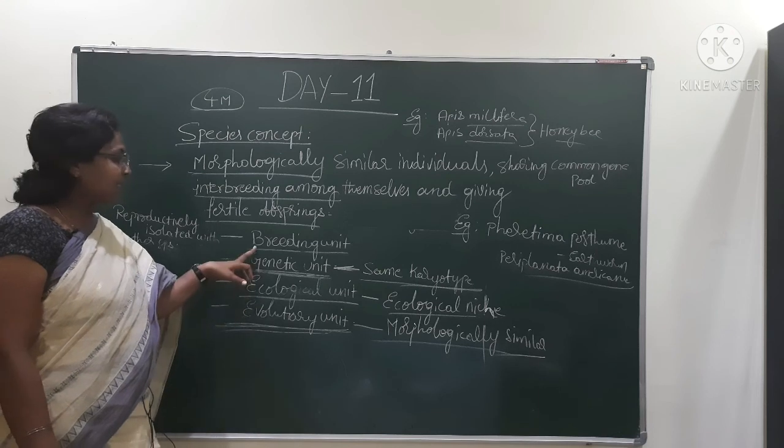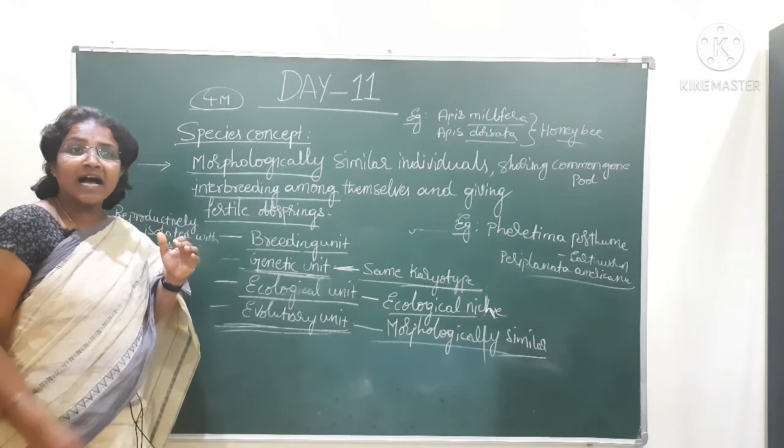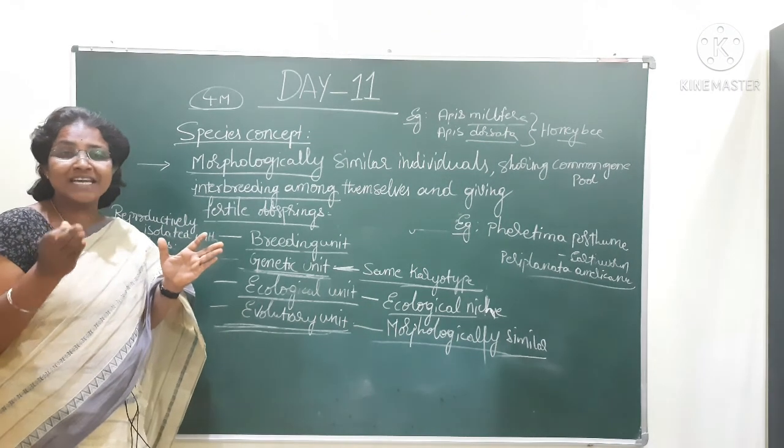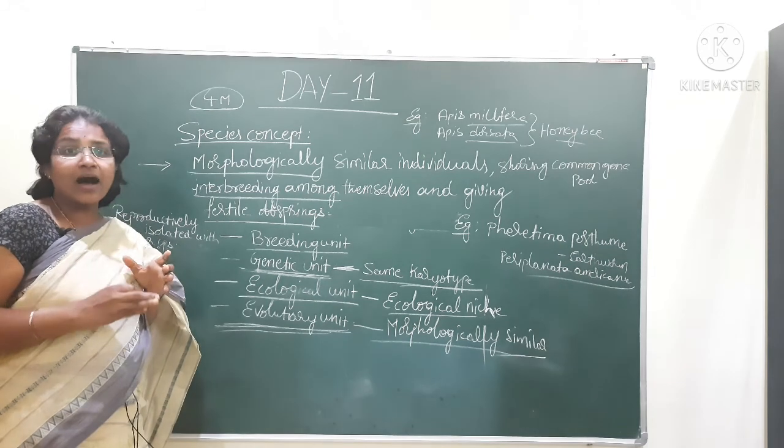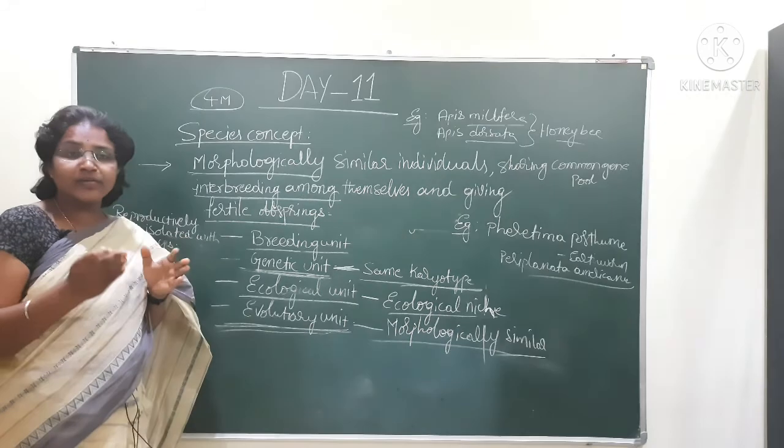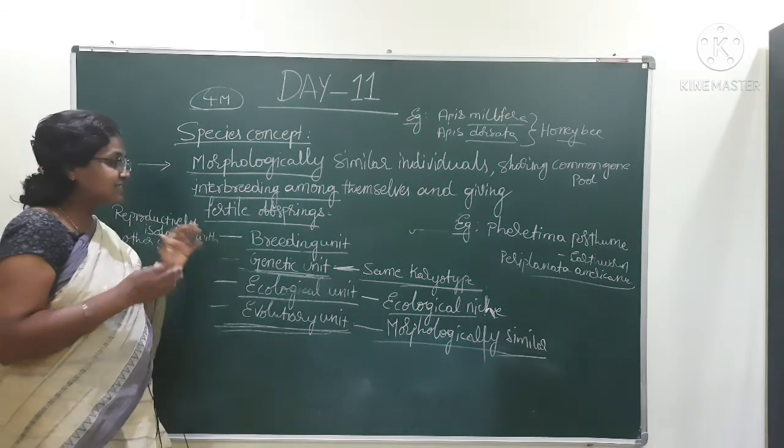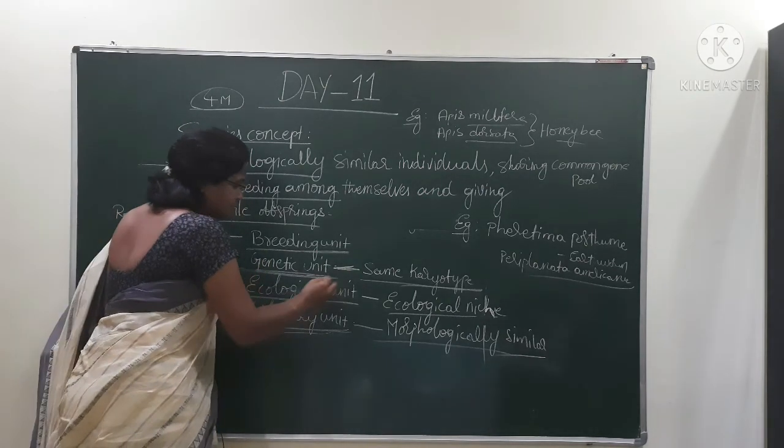Breeding unit means the species which are reproductively isolated with other species. For example, dog species can interbreed with dog only. It cannot interbreed with other species like pig or horse. Hence the species is a breeding unit.